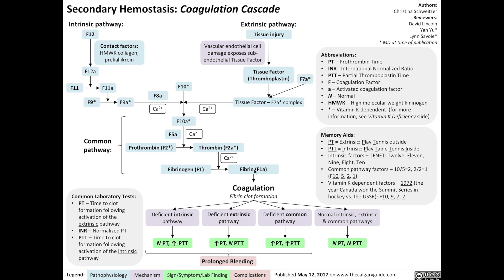They all involve clotting factors. The main one is the extrinsic pathway, otherwise known as the tissue factor pathway. When vascular endothelial cells become damaged, that exposes tissue factor, otherwise known as factor 7, which is a serum clotting factor that normally floats around in your serum. They become exposed to the damaged stromal fibroblasts, and that results in the activation of tissue factor. Activated tissue factor is also known as thromboplastin. Tissue factor also activates factor 7 into factor 7a — the 'a' stands for activated.